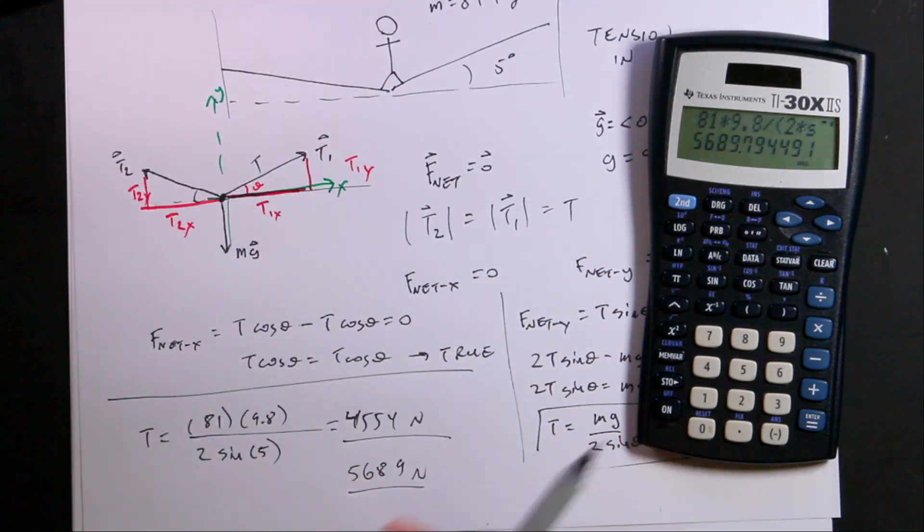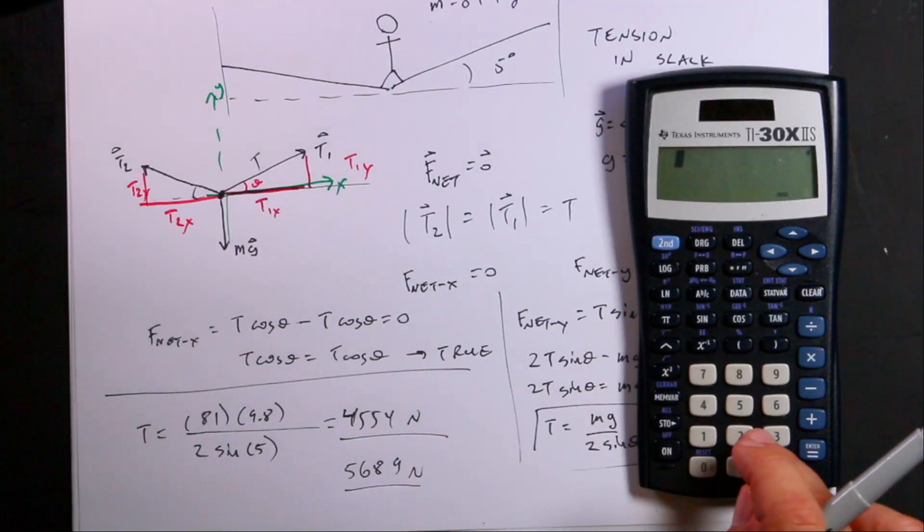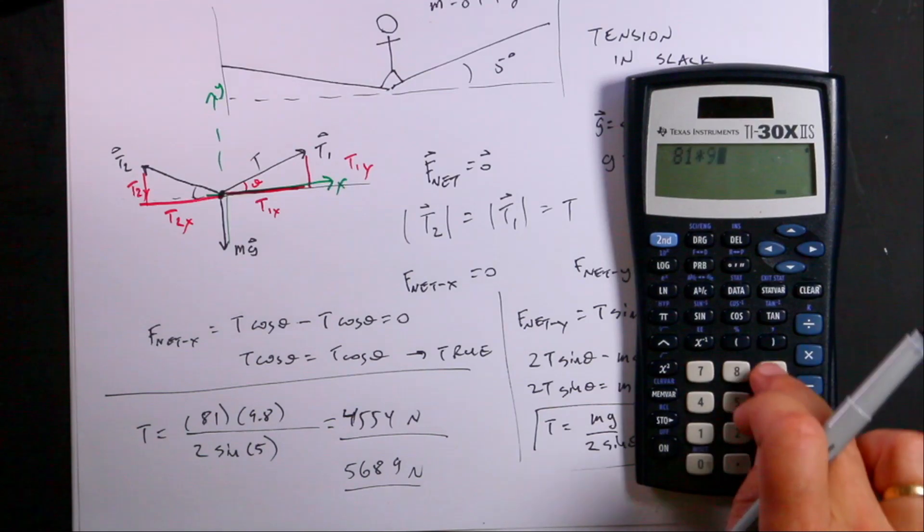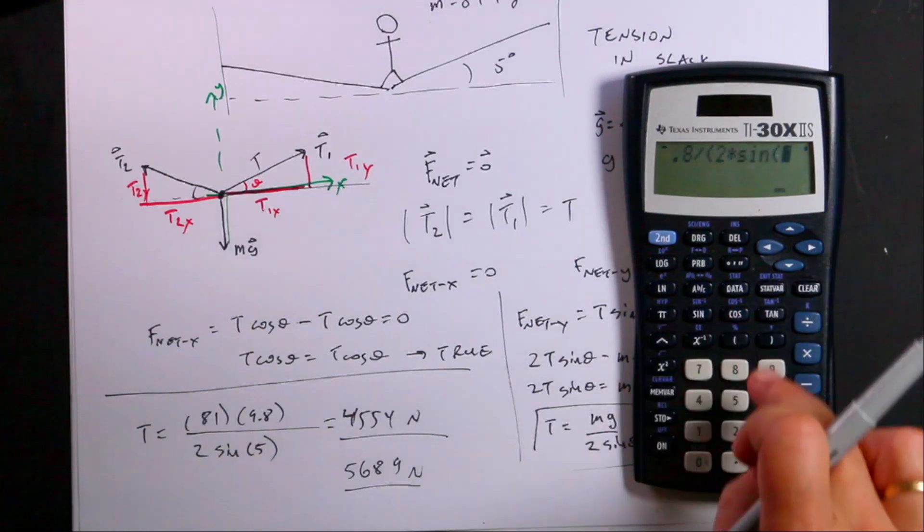And you can play around with that. You can say, what if I change it to 3 degrees, 2 degrees, 1 degree? Let's just do 1 degree just for fun. So I get 81 times 9.8 divided by parentheses 2 times sine of 1.